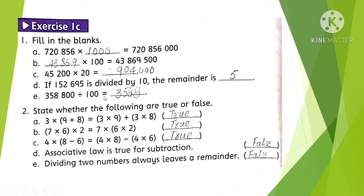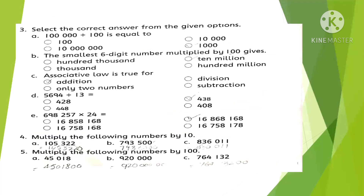Question 2: State whether the following are true or false. Statement A is correct. Statement B is correct. Statement C is correct. Statement D is false, because the associative law is not true for subtraction — it holds for addition and multiplication. Dividing two numbers does not always leave a remainder — that is false.